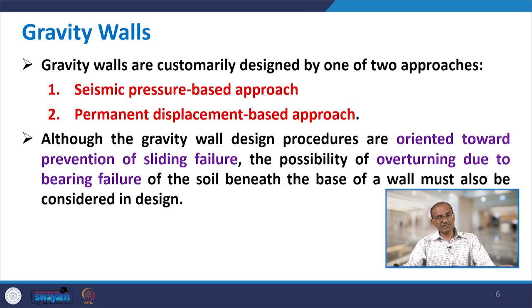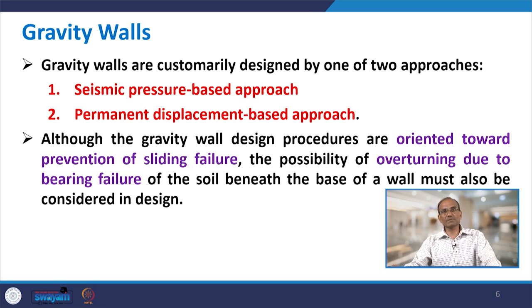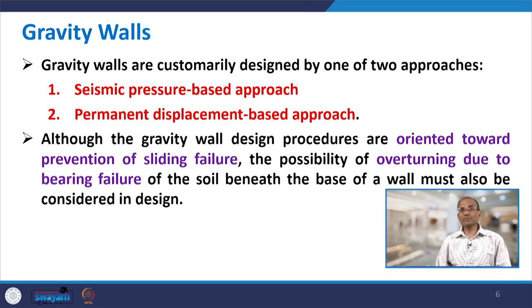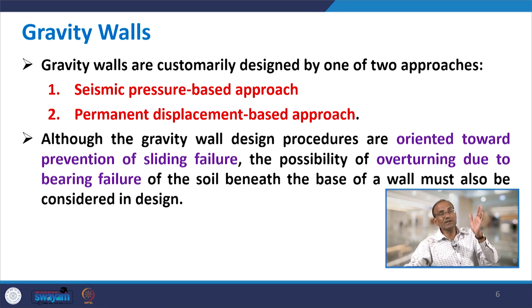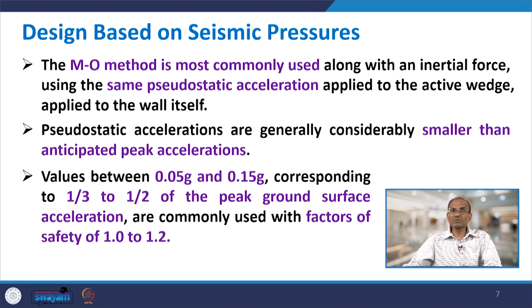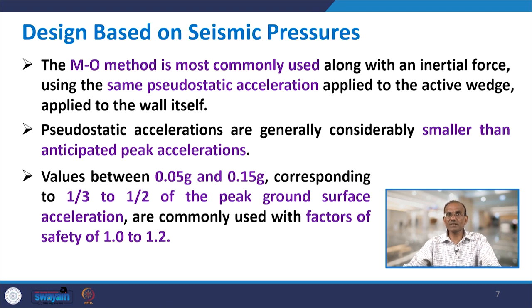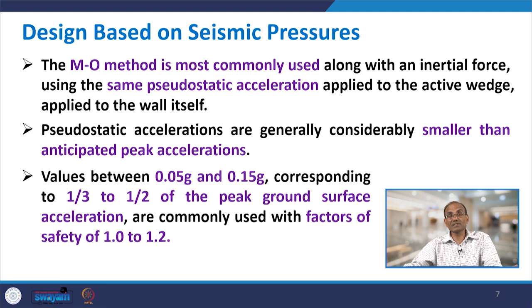For gravity walls, there are two design approaches: the seismic pressure-based approach and the permanent displacement-based approach. Gravity walls are normally designed oriented towards prevention of sliding failure, though overturning due to bearing failure of the soil beneath the base must also be considered. The MO method is most commonly used along with inertial forces using the same pseudo-static acceleration applied to the wall itself. Pseudo-static accelerations are generally considered smaller than the anticipated peak acceleration; otherwise the design would be very conservative.